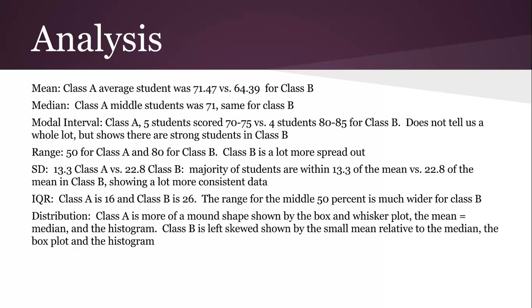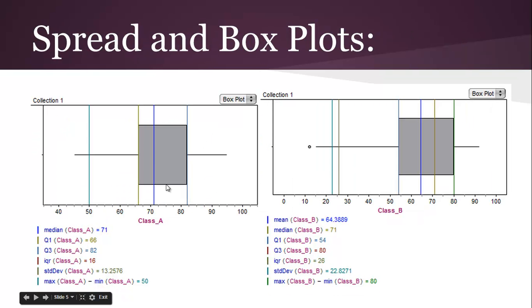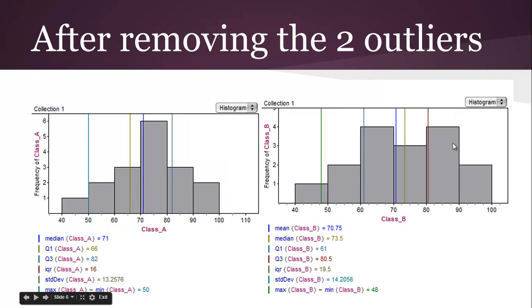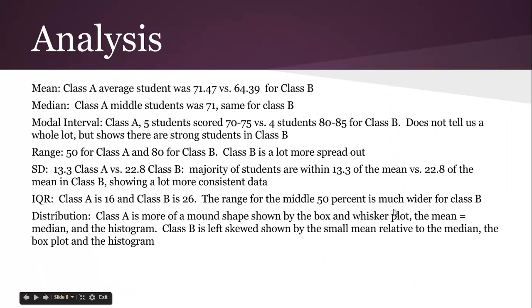Distribution in class A is more of a mound shape, shown by the box and whisker plot. You can see the mound shape for the histogram, the mound shape for the box and whisker plot. And then class B, you get this idea that it's potentially right skewed. The median is to the right, the box is to the right. It doesn't show that so much on the histogram, but we definitely know it's left skewed. This is the histogram before you remove the outliers, so you can clearly see class B is left skewed, because the average is getting pulled to the left, the average is getting pulled down. And you can see that in the box plot.